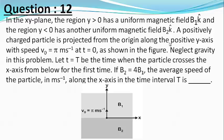Let small t equals capital T be the time when the particle crosses the x-axis from below for the first time. If B2 equals 4B1, the average speed of the particle in meters per second along the x-axis in the time interval capital T is dash.